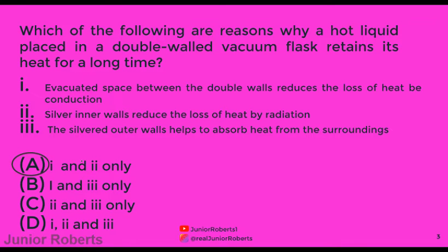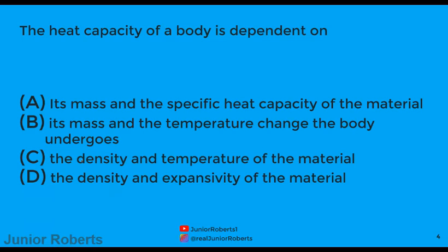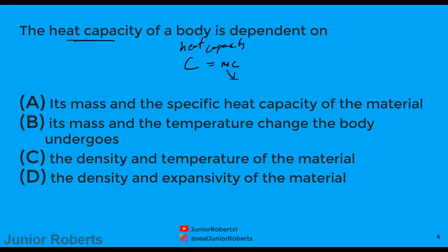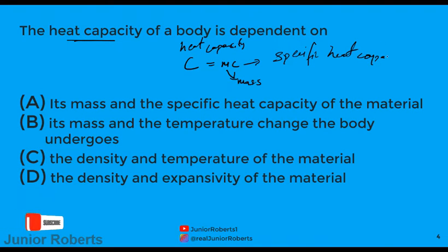The next question asks: the heat capacity of a body is dependent on what? We know the expression relating heat capacity C, mass m, and specific heat capacity c is: C = mc. Here C is heat capacity, m is mass, and c is specific heat capacity. So the answer is A — its mass and the specific heat capacity of the material.